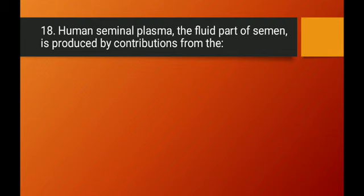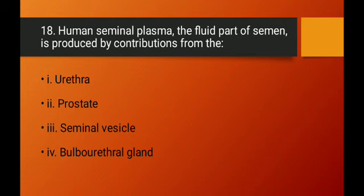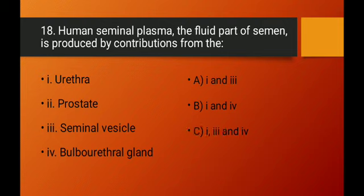Question number eighteen: human seminal plasma is produced by contributions from which glands? The seminal plasma is mainly produced by the seminal vesicle (2), prostate gland (3), and bulbourethral gland (4). The urethra (1) is not a contributing gland. Option D — 2, 3, and 4 (prostate, seminal vesicle, bulbourethral gland) — is the right answer.